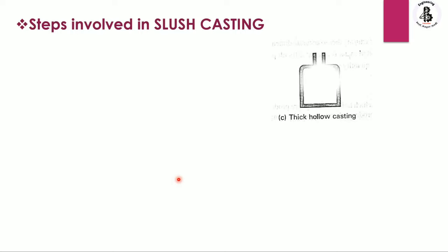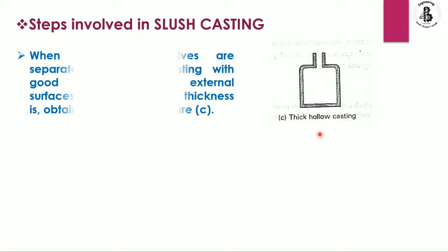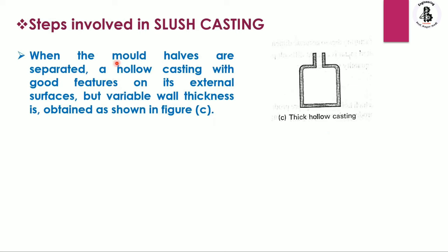Just you can see this is our thick hollow casting. When the mold halves are separated, a hollow casting with good features on its external surfaces but variable wall thickness is obtained, as you can see in the figure.